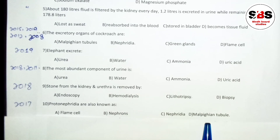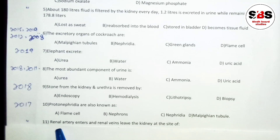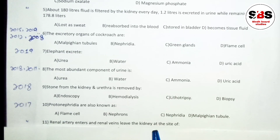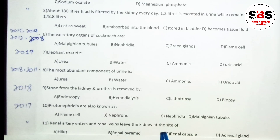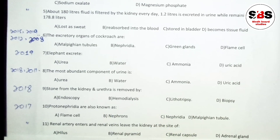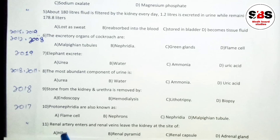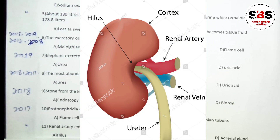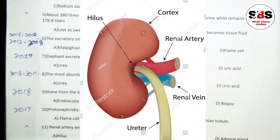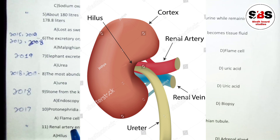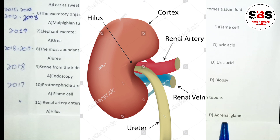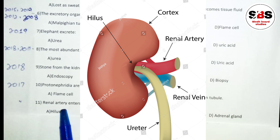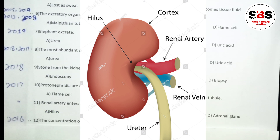Question number 11 (asked in 2017): the renal artery enters and the renal vein leaves the kidney at which site? Options are: hilum, renal pyramid, renal capsule, or adrenal gland. The hilum is the inner concave part of the kidney where the renal artery enters and the renal vein leaves. Renal pyramid is an internal structure, renal capsule is the outer covering, and adrenal gland is an organ found on top of the kidney. The correct answer is hilum.